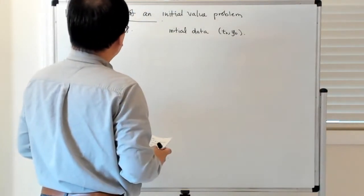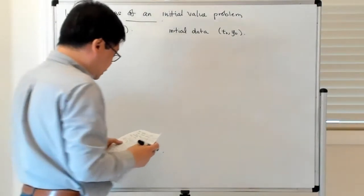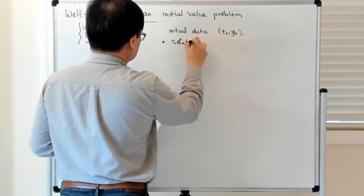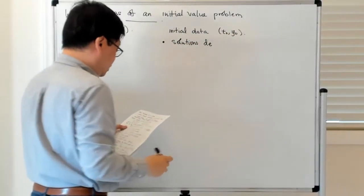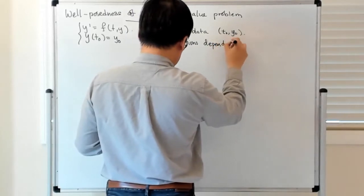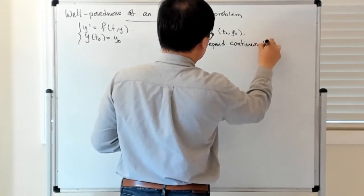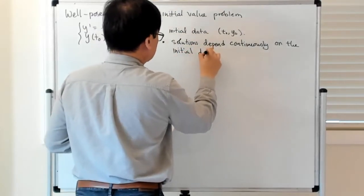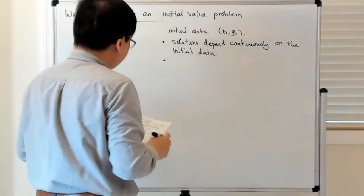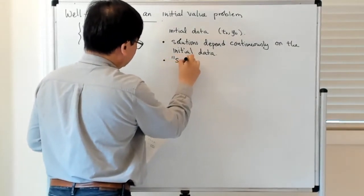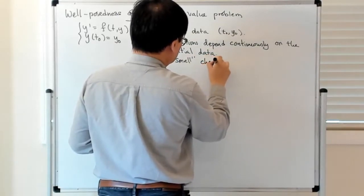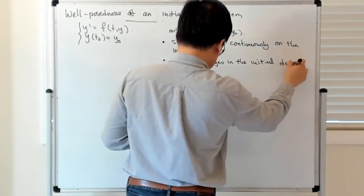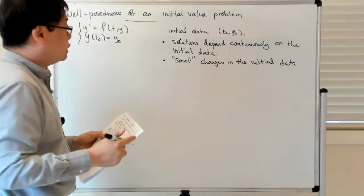In particular, for an initial value problem to be well-posed, you want two things. The first is that solutions depend continuously on the initial data. The second, which is closely related, is that small changes in the initial data result in correspondingly small changes in the solution.